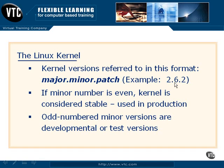Your minor number is going to be either even or odd. If it's even, then it's considered a stable version, meaning it's ready for production. If it's an odd number, such as 2.5, then it's actually an in-development state of that minor kernel revision. For business applications and production environments, we're going to want to rely on that even minor revision number. And finally, the patch level basically lets you know where you stand on being up-to-date for security and functionality patches.